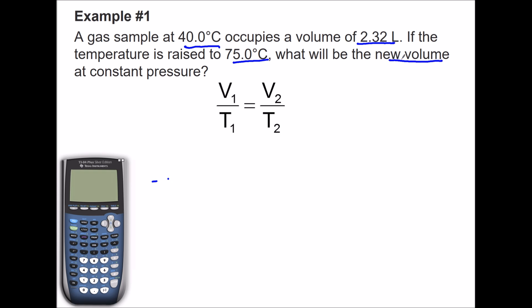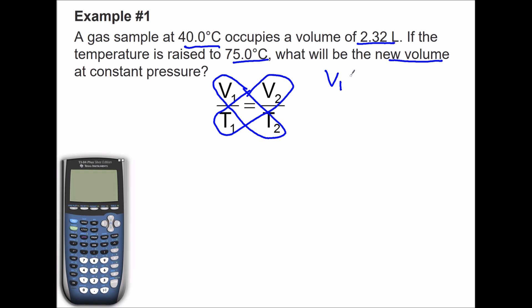One thing you want to do off the bat, especially when dealing with fractions, is to get rid of them. The way we get rid of fractions is to cross multiply. So we're going to take the Charles's Law expression and cross multiply the variables. V1 times T2 equals V2 times T1, so I cross multiply my variables to make it easier and I'm no longer dealing with a fraction.